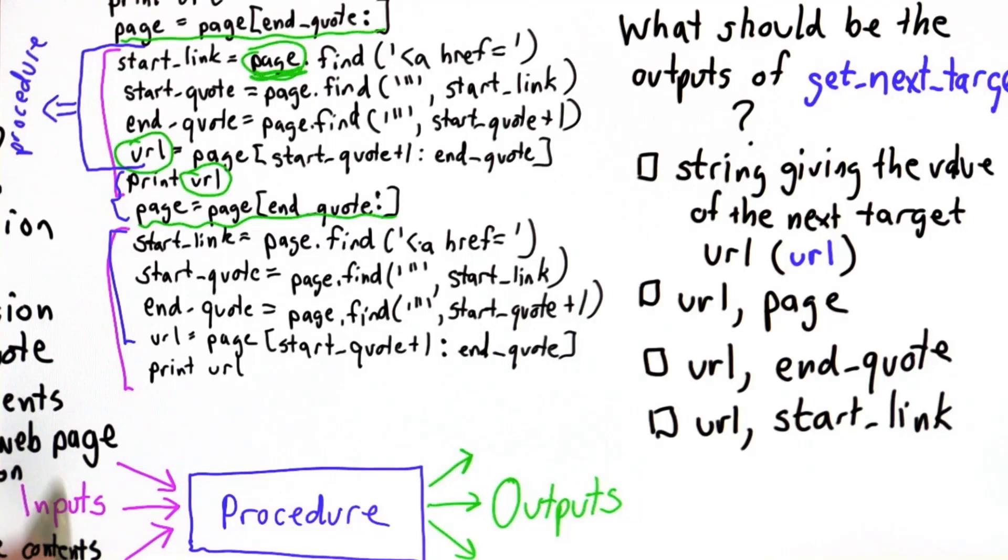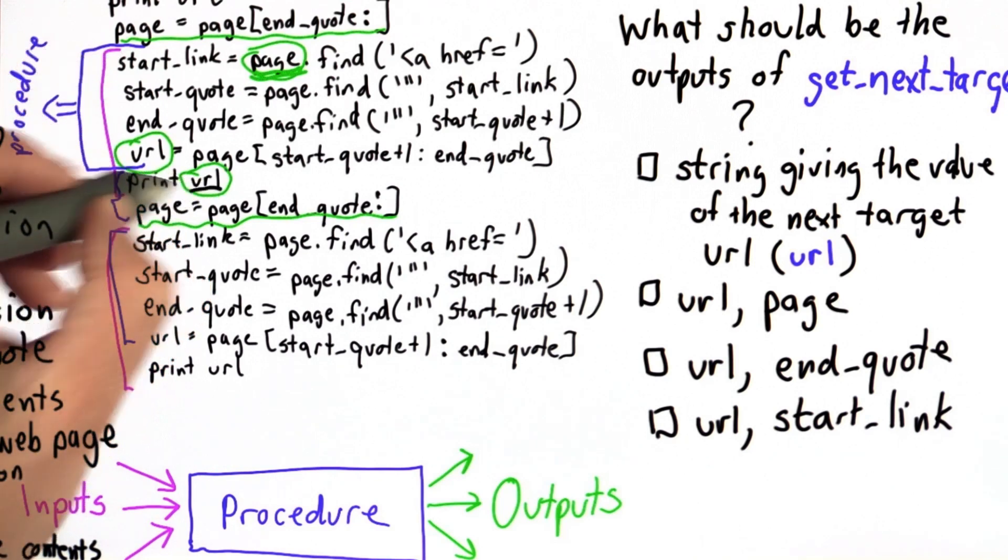So this is a little bit trickier. To answer this one, we have to look at the code after the procedure. And remember, we said the procedure is replacing these four lines. After the procedure, what we do is print the value of URL.